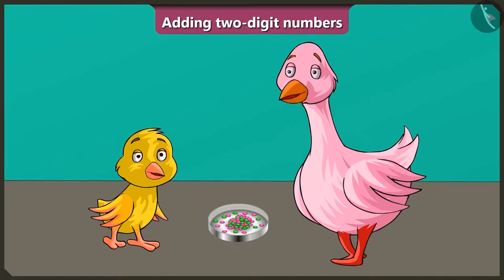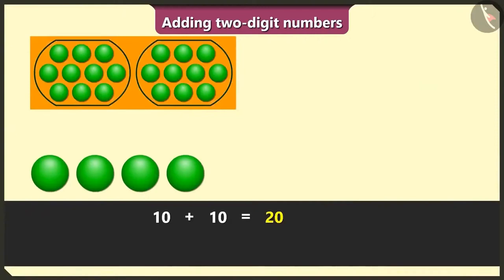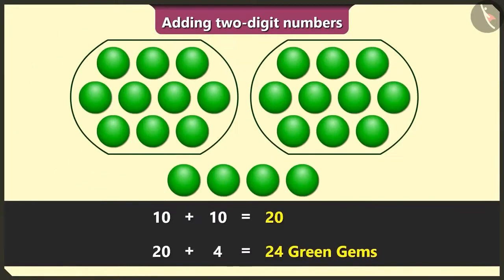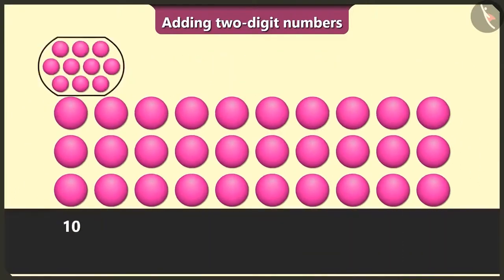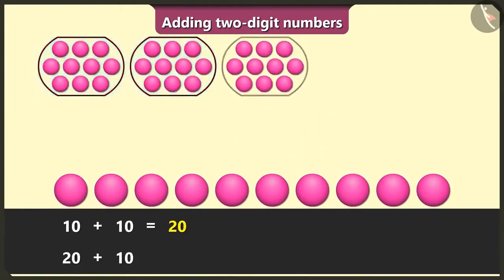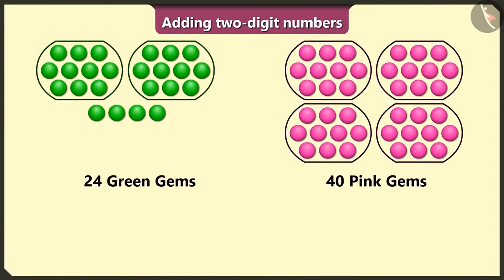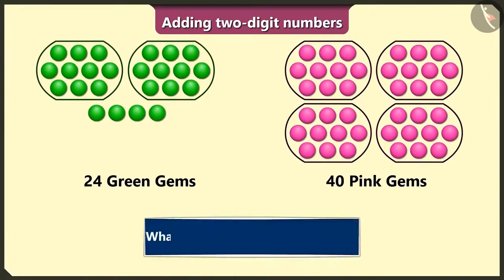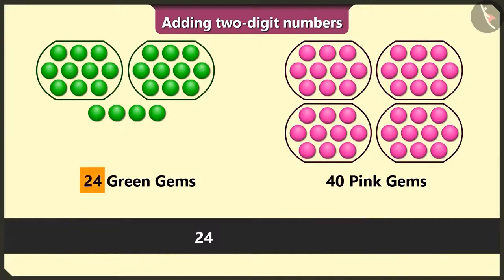Yes, auntie. Pillu, just see — here we have 10 and 10, 20; 20 and 4, 24 green gems. Yes. Let me count the pink gems now — here, 1, 2, 3, 4, 5, 6, 7, 8, 9, 10; 10 and 10, 20; 20 and 10, 30; 30 and 10, 40. There are 40 pink gems. Yes. So tell me — what is the total number of gems we have here? To find this out, we have to add the numbers 24 and 40.